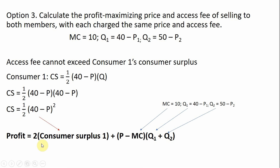The profit equation for the firm is two times the consumer surplus from consumer one — two because we have two consumers — plus profit per unit times the total units sold to consumer one and consumer two. Substituting one-half (40 minus P) squared and marginal cost of 10, and substituting in Q₁ and Q₂.